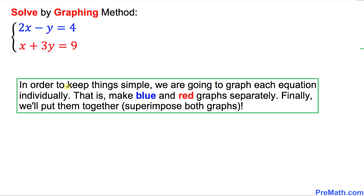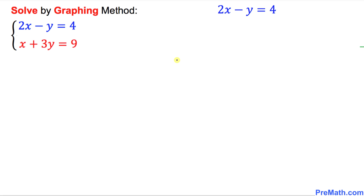In order to keep things simple, we are going to graph each equation individually — that is, we are going to make the blue and red graphs separately. Then finally we are going to put them together, in other words superimpose these two graphs. So let's get started with our graphing process.